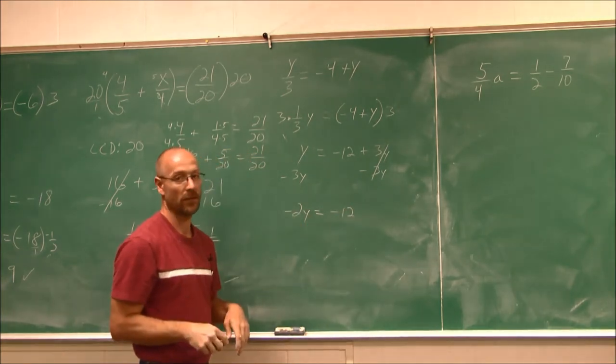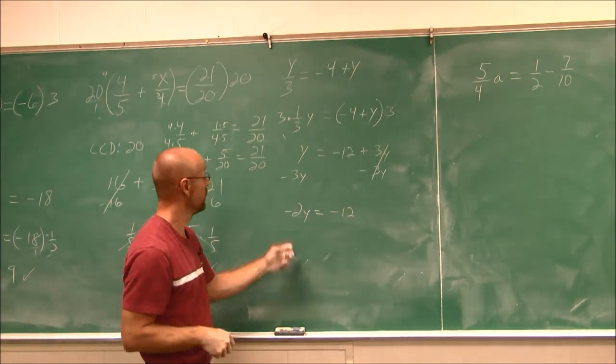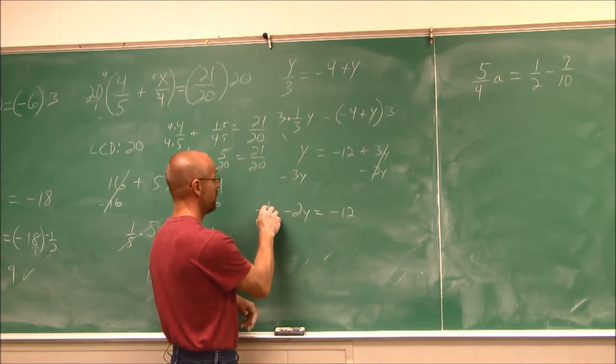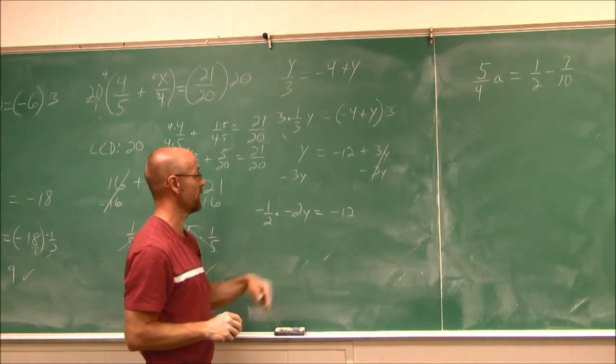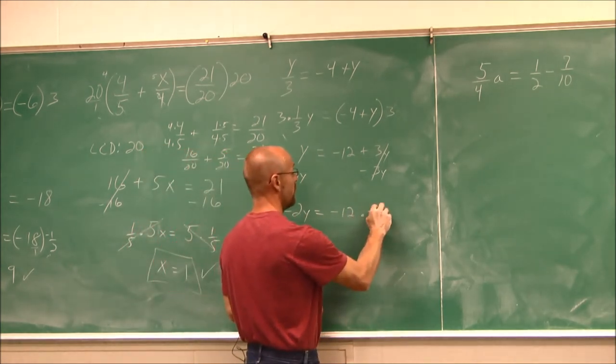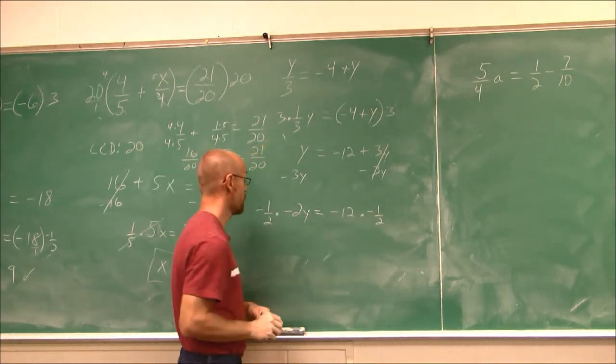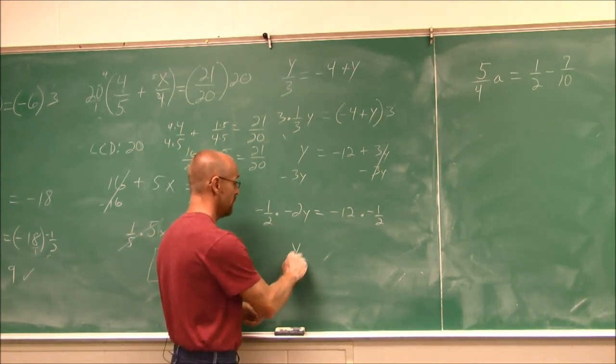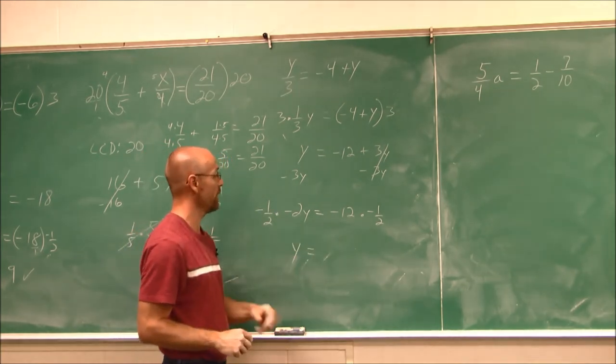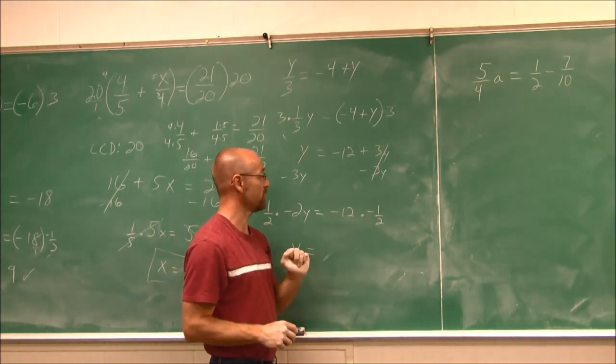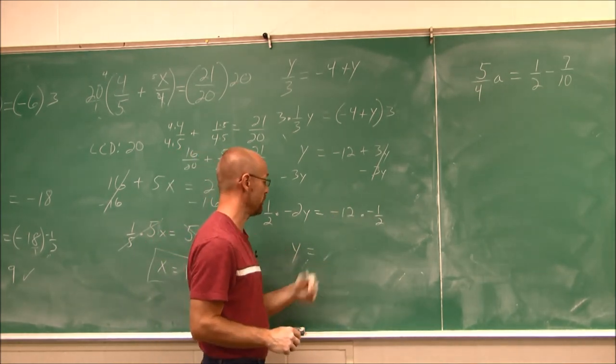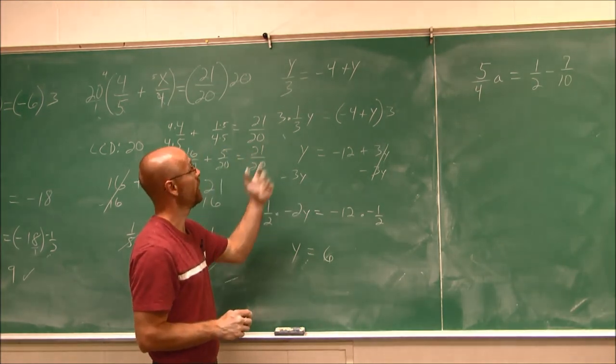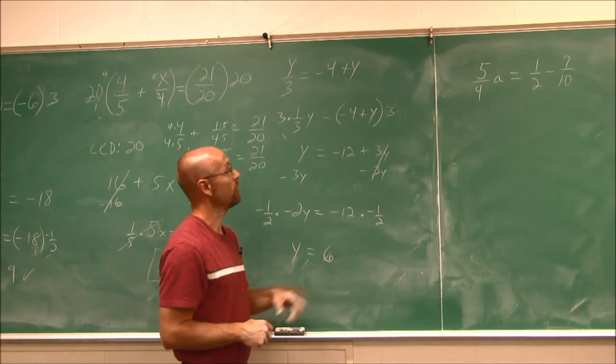And now, we're ready to solve for y by using the tool of multiplying by the reciprocal. A negative 1 half. This is the reciprocal of negative 2. And what I do to one side, I do to the other. So negative times a negative is positive. Half of 2 is 1. 1y is just y. Negative times a negative is positive. Half of 12 is 6. y equals 6. Then we'll go ahead and check our work.